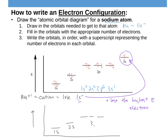For a sodium ion, we still have the 1s, 2s, and 2p subshells. Sodium (Na) had 11 electrons, so Na+ only has 10 electrons because it lost one. Putting in those 10 electrons gives us 1s2, 2s2, 2p6. That's the change from a neutral sodium atom — which had a 3s1 electron — to the sodium ion Na+1, where that 3s electron is gone.